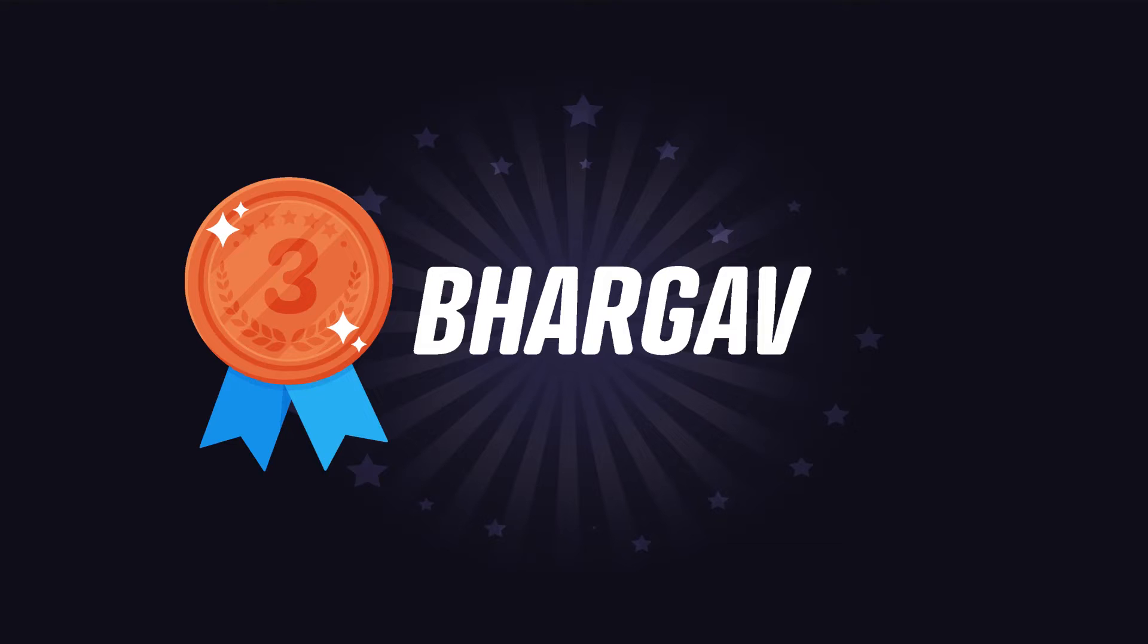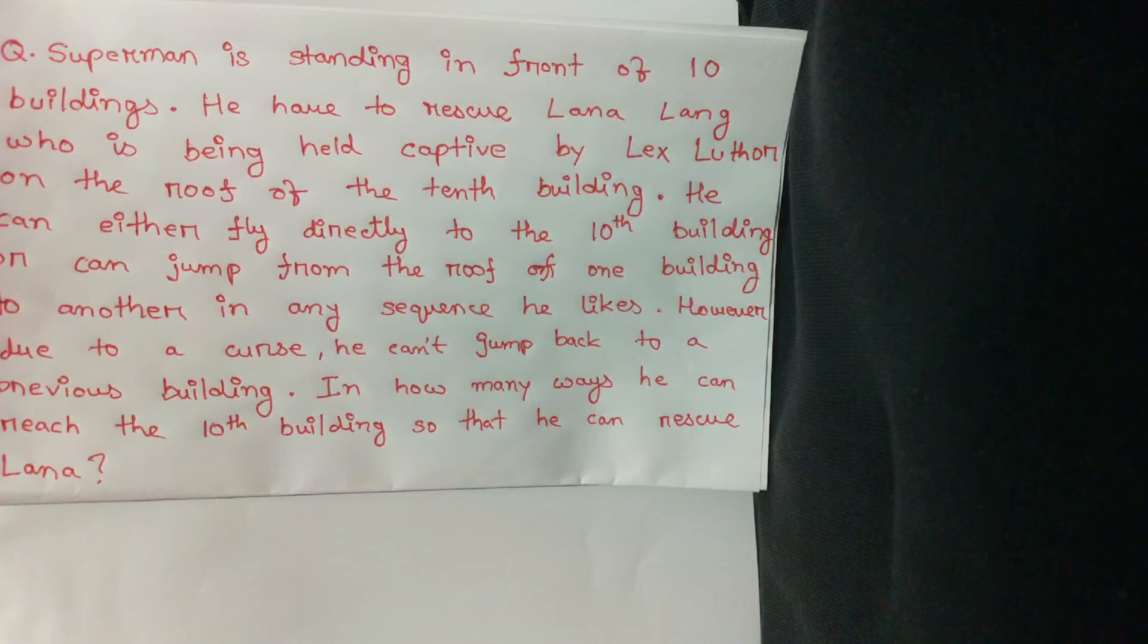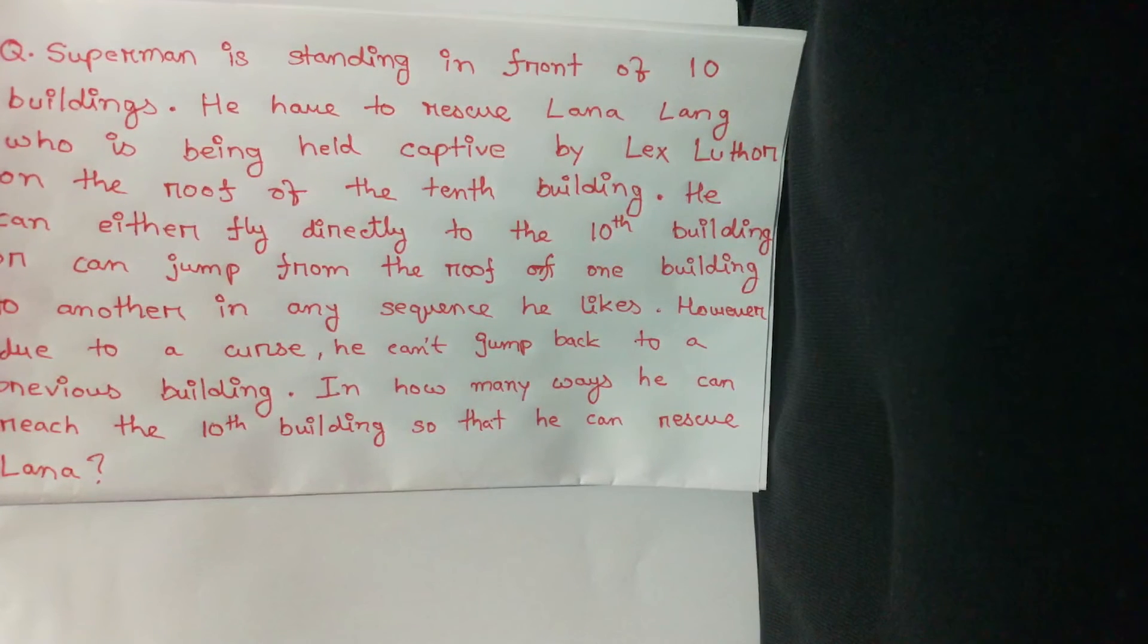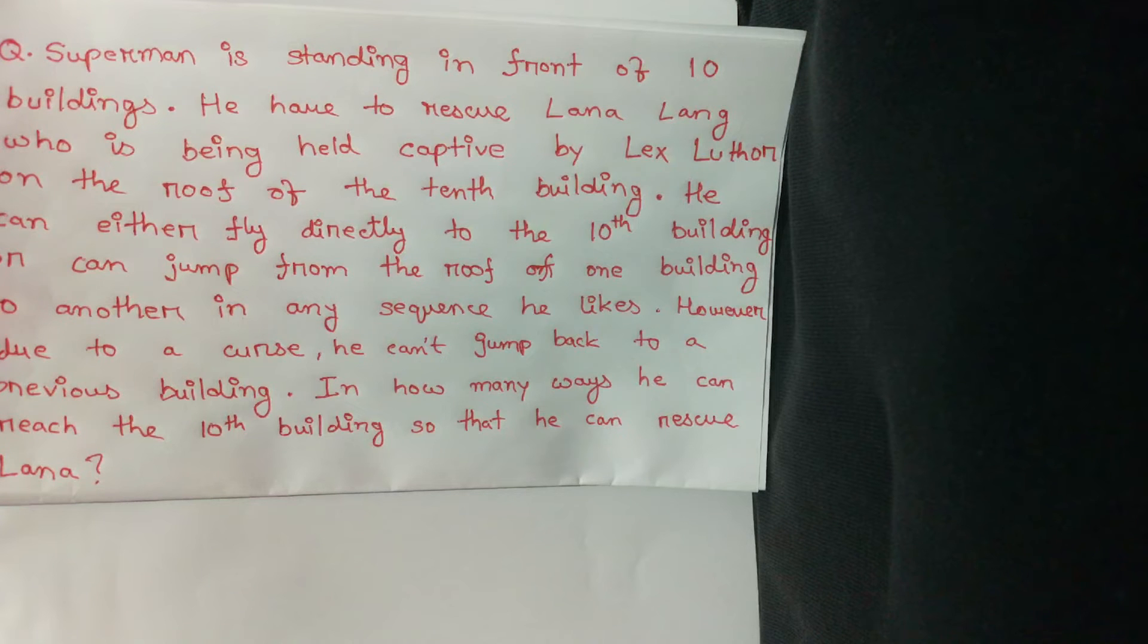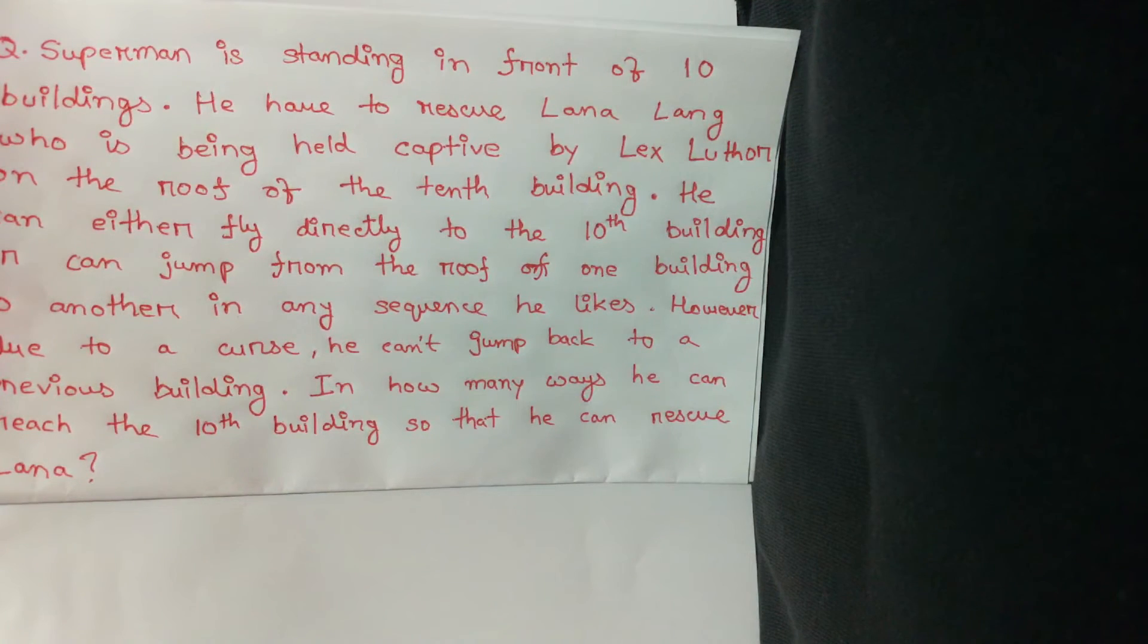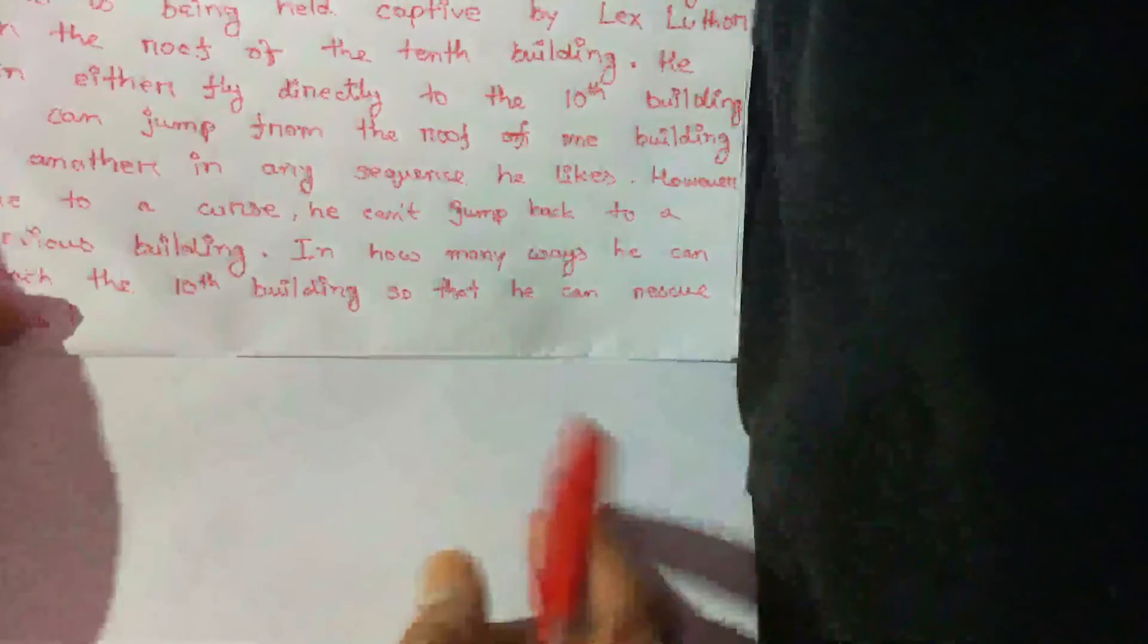Superman is standing in front of 10 buildings. You have to rescue Lana Lang, who is being held captive by Lex Luthor on the roof of the 10th building. He can either fly directly to the 10th building, which I think is really the logical thing to do here, or can jump from the roof of one building to another in any sequence he likes. However, due to a curse, he can't jump back to a previous building. So here is the constraint. In how many ways can he reach the 10th building so that he can rescue Lana? So this is the question. I tried to make it look like a typical PNC question. But here's the thing: if you're one of those students who really hates to go and solve questions with the PNC formulae, I'm going to discuss two approaches here and I hope you enjoy.